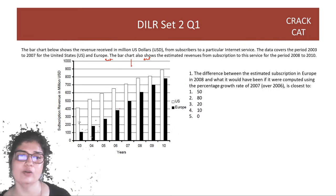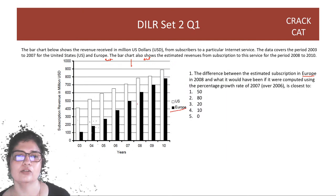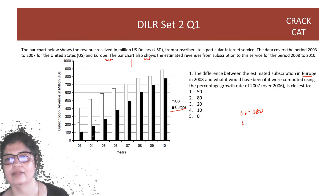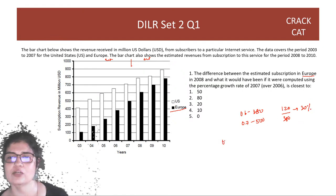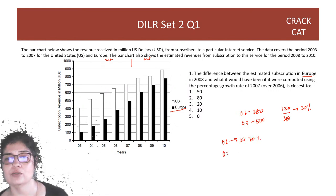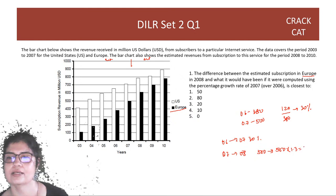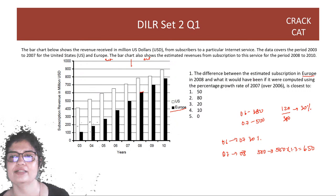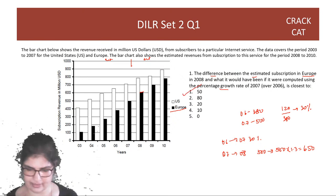Question 1: The difference between the estimated Europe subscription in 2008 and what it would have been using the 2007 percentage growth rate. Europe's 2006 revenue is around 380, 2007 is 500 — a change of 120 on 380, which is just over 30%. Applying that to 500 gives 650, but the estimated 2008 figure is 600. The difference is approximately 50.